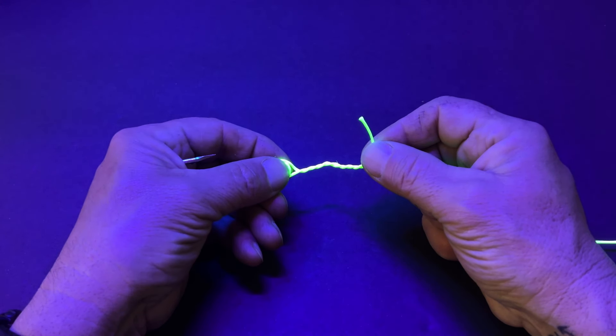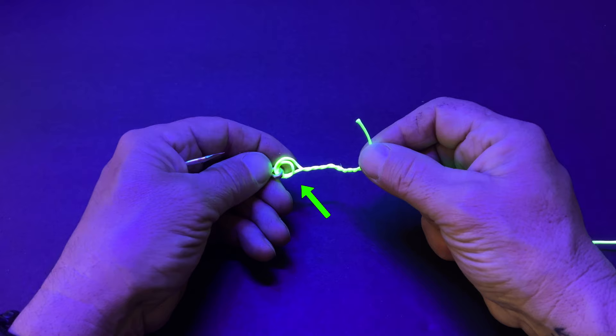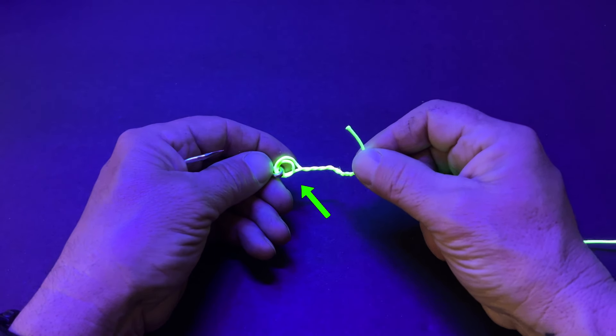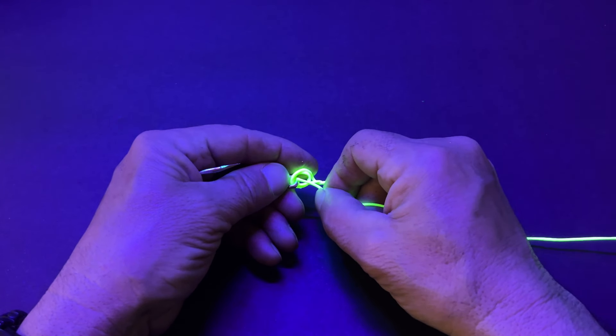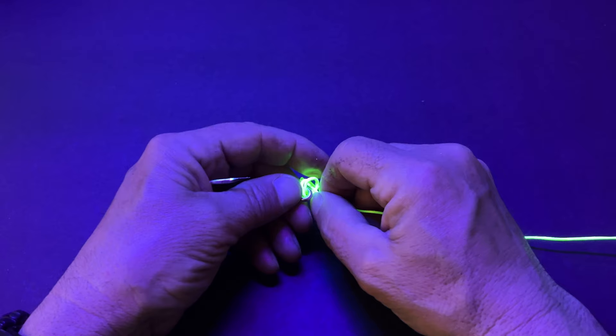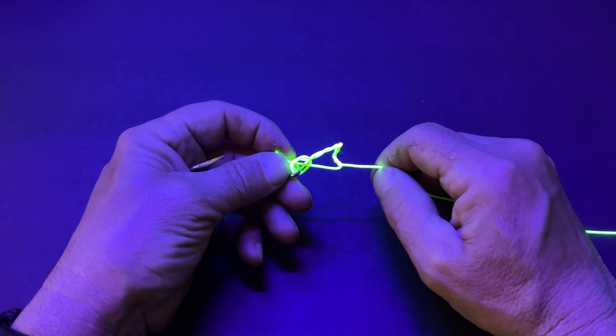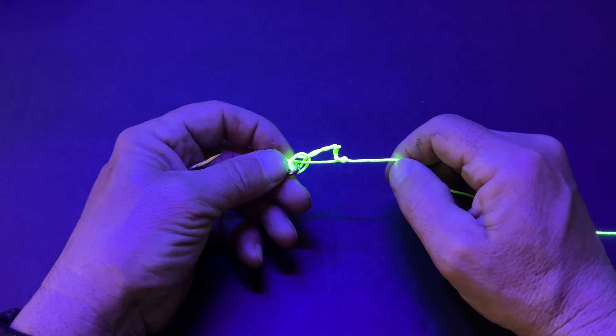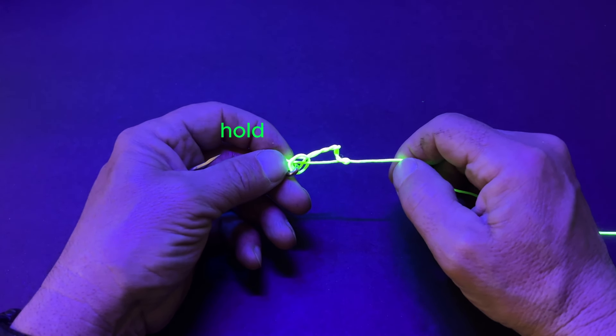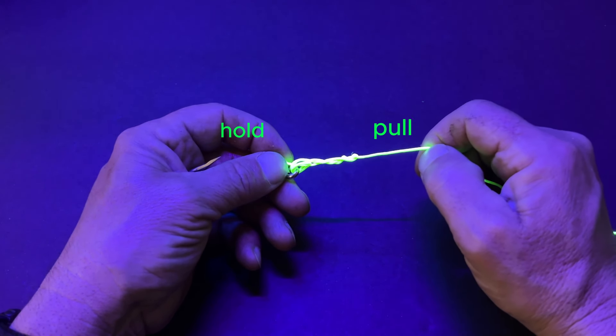Now you're gonna put the tagline through that loop that you pinched near the hook. Wet your fishing line. Hold the tagline and pull the main line.